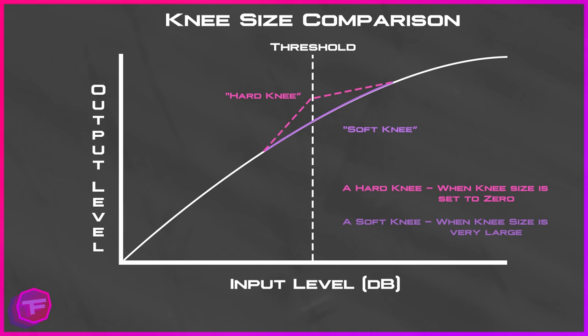A hard knee is a very hard angle where audio compression becomes immediate — it is squared off, not a smooth and gradual transition like the soft knee would be. The knee size for a hard knee is when the knee size itself is set to zero. A soft knee is when the knee size is very large. I use a very soft knee — all the way up — because I want a very smooth and gradual transition with my audio signal so it sounds natural.